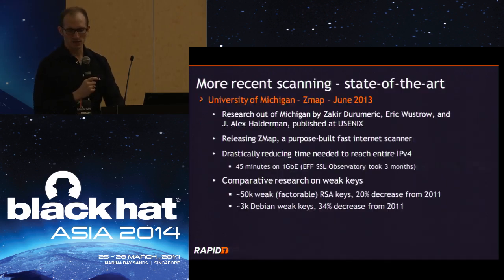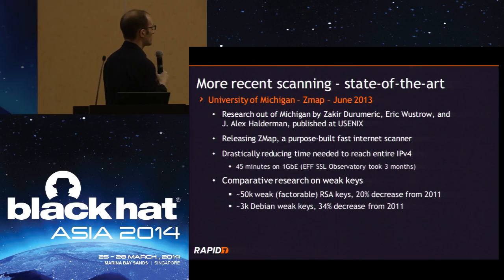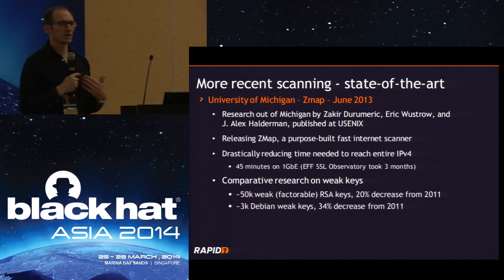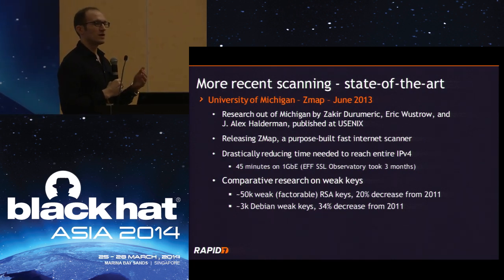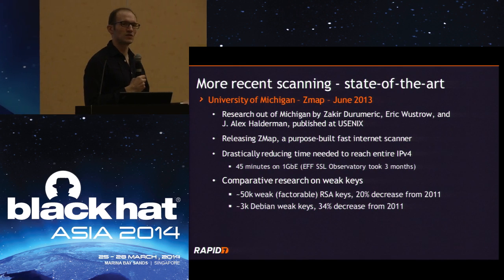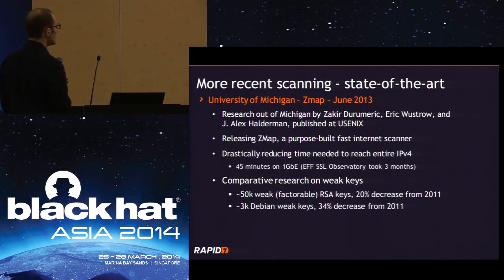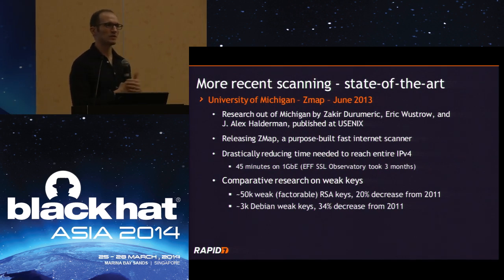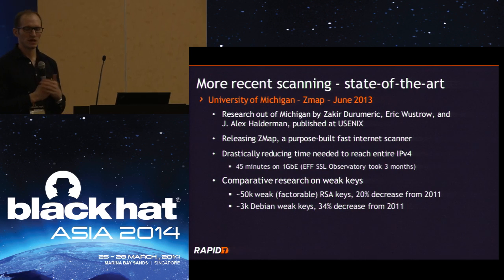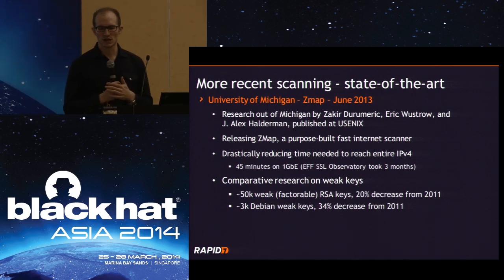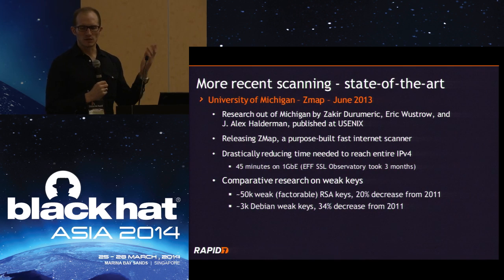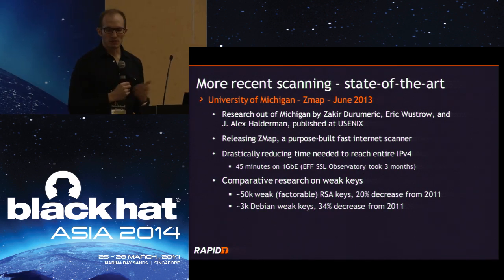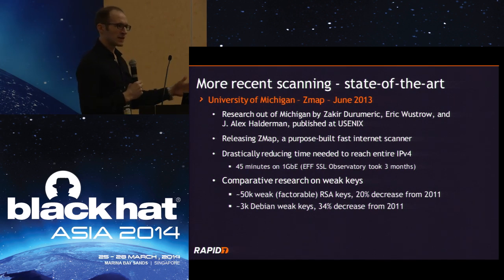So we can't take this anymore — this is really crazy. Let's get to the recent changes in internet scanning and why we're now doing a project that's very different from the historic approaches. Recently, there was research out of the University of Michigan and they published a tool called ZMap. Probably a lot of you have heard of this. It made news because it's very fast and allows you to scan the internet very quickly. It's a purpose-built internet scanning tool — only basically done for internet-wide studies.